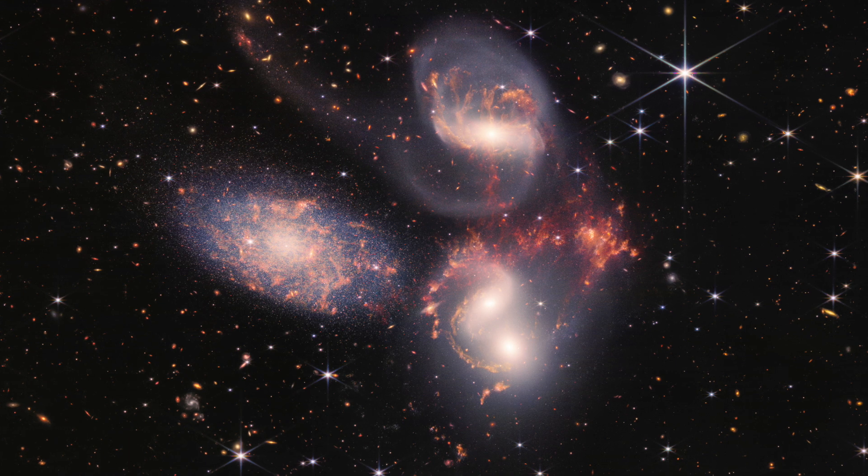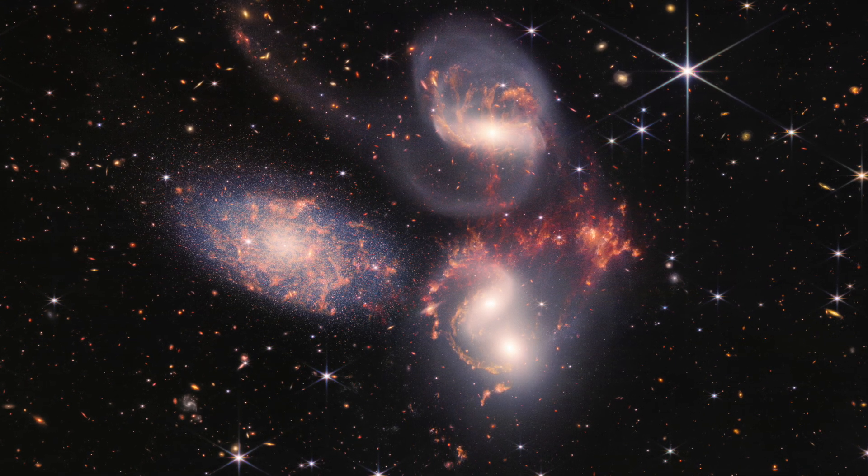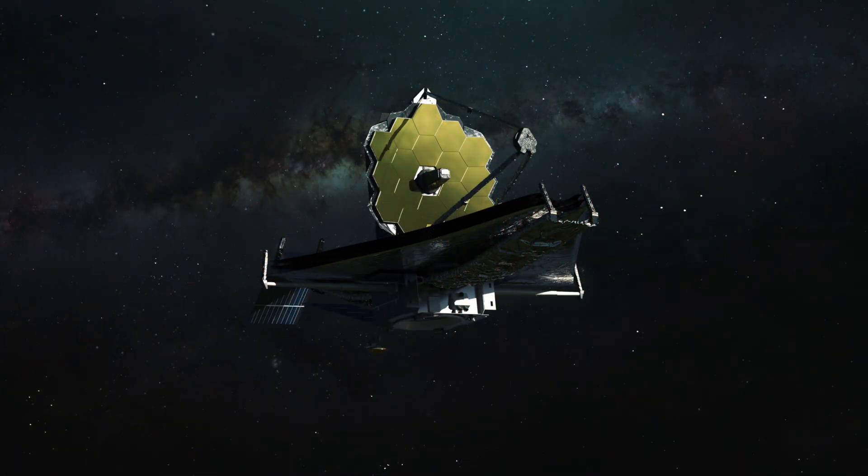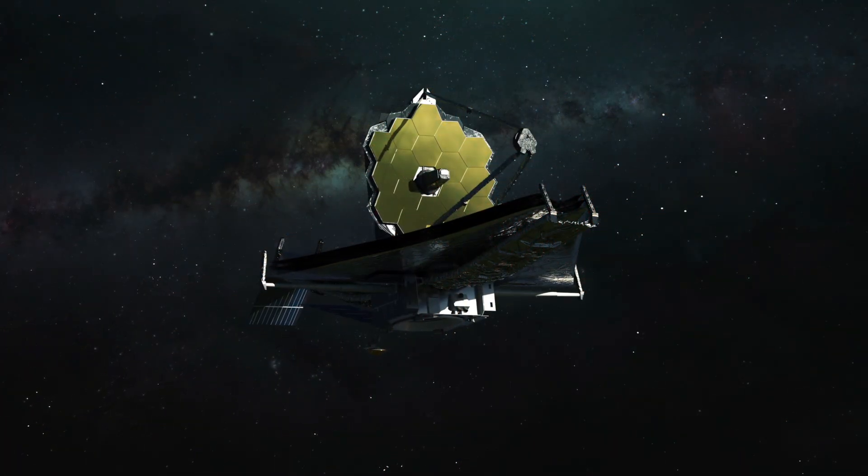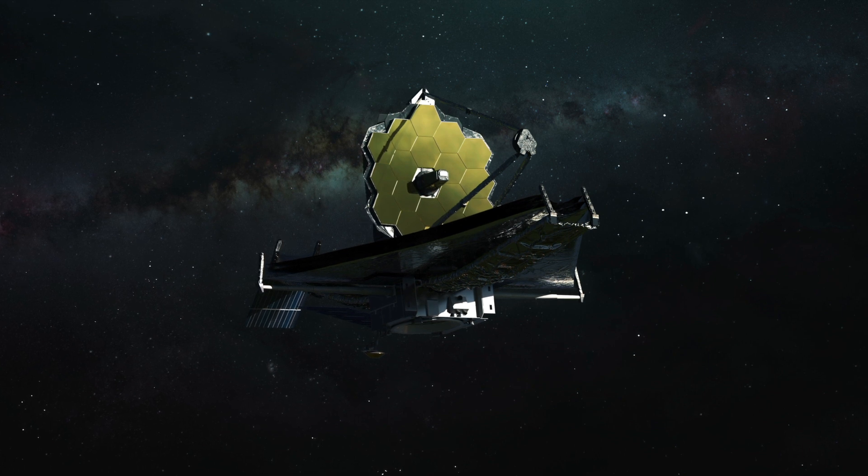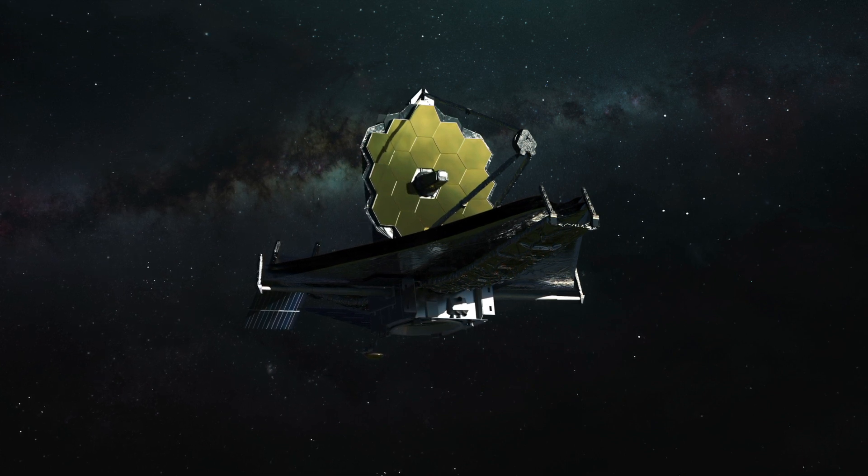The wavelengths that Webb used to view the supermassive black hole have never been observed. The result is, they correspond to atomic hydrogen, molecular hydrogen or two hydrogen atoms bound together and electrically charged iron ions in the gas surrounding the black hole.